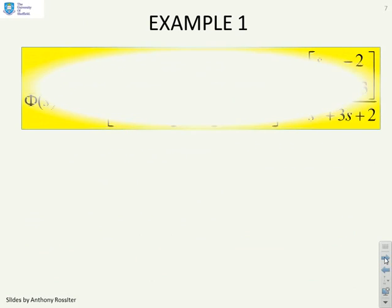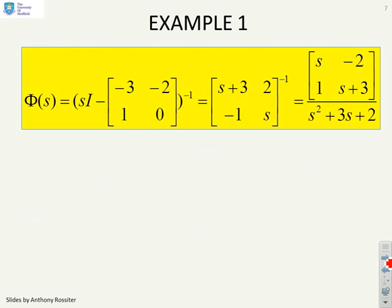First example then. You'll see we've given A straight into the formula. There's our A matrix. And we've said that phi of s equals (sI minus A) inverse, and therefore you get this expression here, (sI minus A) inverse. And I've done the algebra for you because I don't want to waste your time showing how to do matrix inverses. You can do that by yourself. So here's the result.